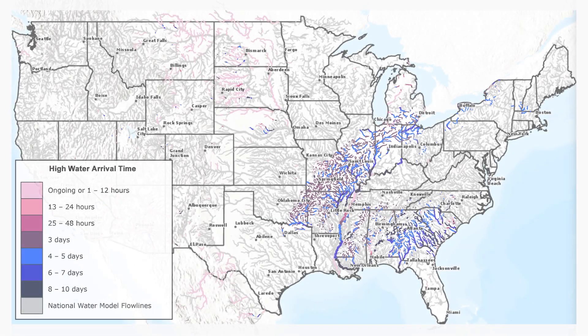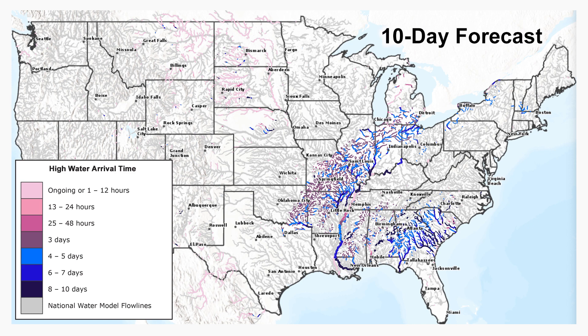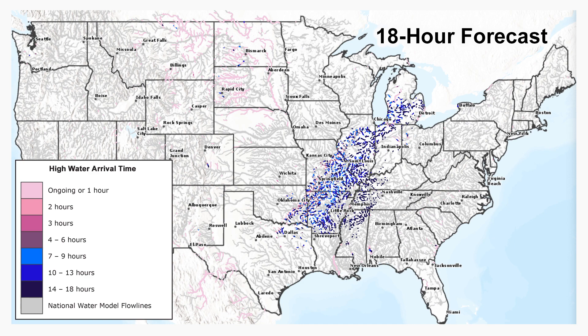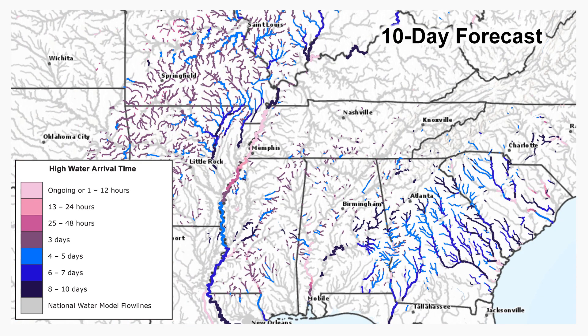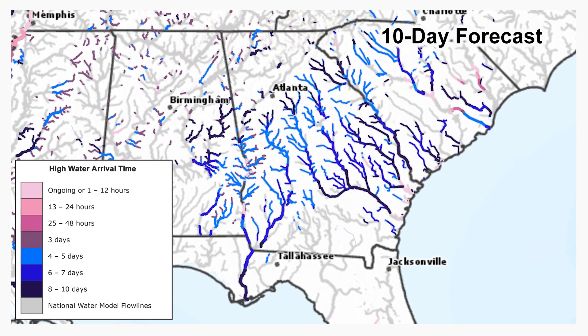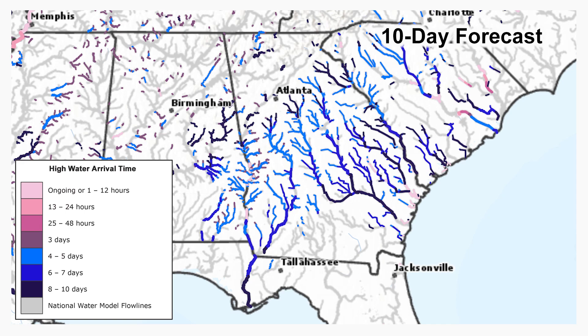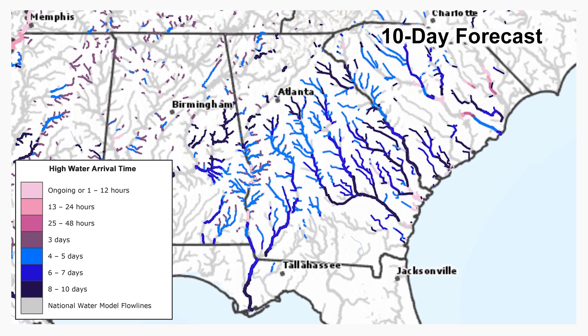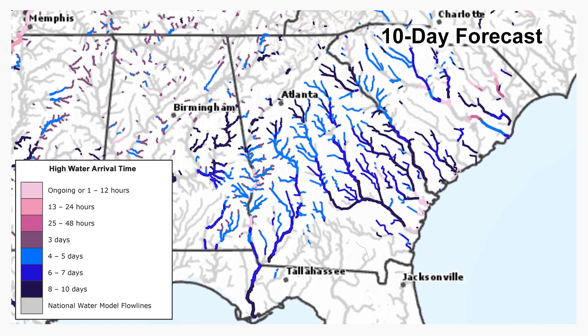Awareness of timing regarding flow magnitude changes is absolutely necessary for actionable warnings and forecasts. This service provides visualizations for the medium-range forecast covering 10 days and an 18-hour short-range forecast. The 10-day high water arrival time forecast visualization highlights stream reaches expected to have flow at or above the estimated high water threshold within the next 10 days.